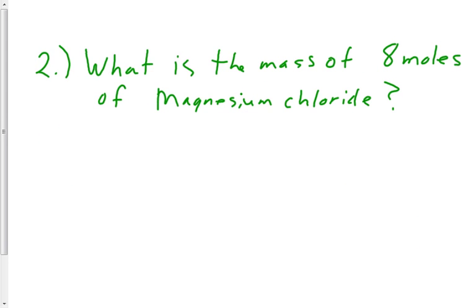For the second one, what's the mass of 8 moles of magnesium chloride? So this time they gave us N, and it's 8, and they tell us it's magnesium chloride. A lot of people got it wrong because they didn't swap and drop. This is an ionic compound, 2 plus, minus 1, so this would be MgCl2.